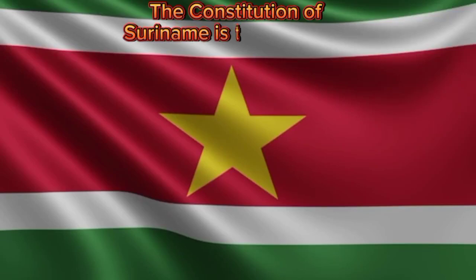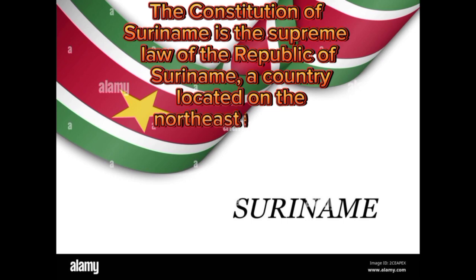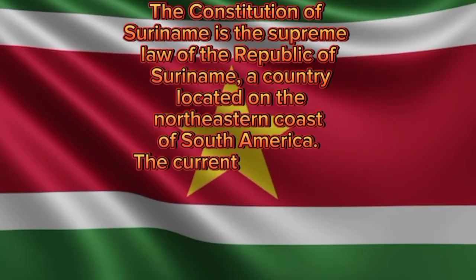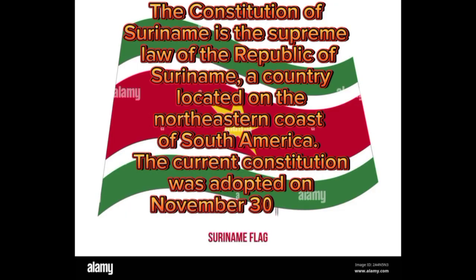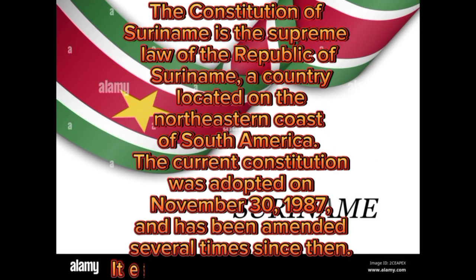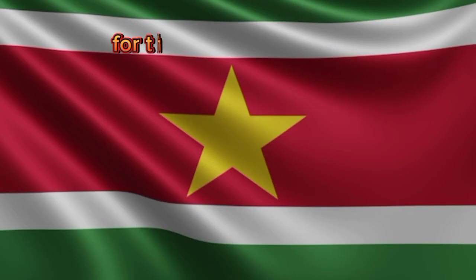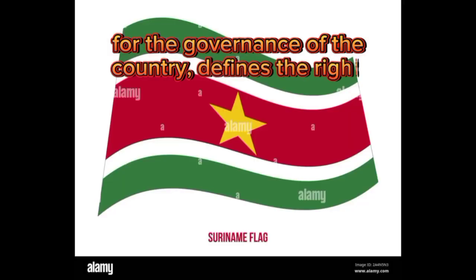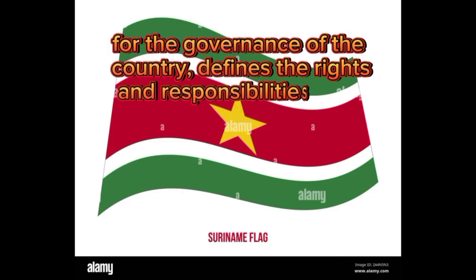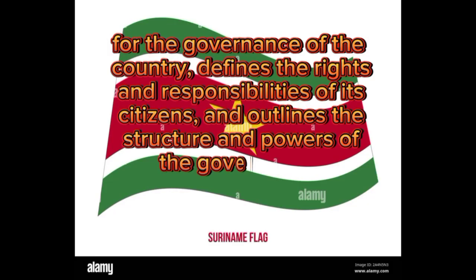The Constitution of Suriname is the supreme law of the Republic of Suriname, a country located on the northeastern coast of South America. The current constitution was adopted on November 30, 1987, and has been amended several times since then. It establishes the framework for the governance of the country, defines the rights and responsibilities of its citizens, and outlines the structure and powers of the government.